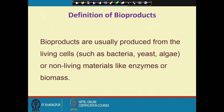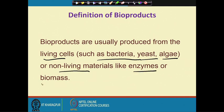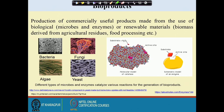Bioproducts are usually produced from living cells such as bacteria, yeast, and algae. Different types of living cells can produce bioproducts, but they can also be produced from non-living sources like enzymes or biomass. Bioproducts are commercially useful products made by the use of biological microbes or renewable materials — so not only products from living systems, but also those made using biomaterials are considered bioproducts.